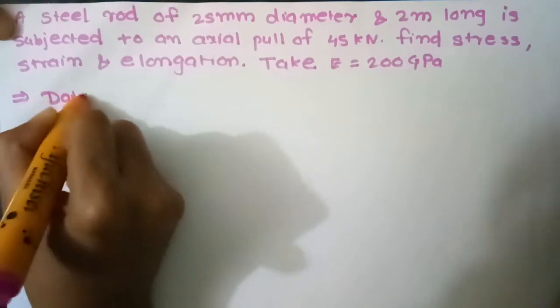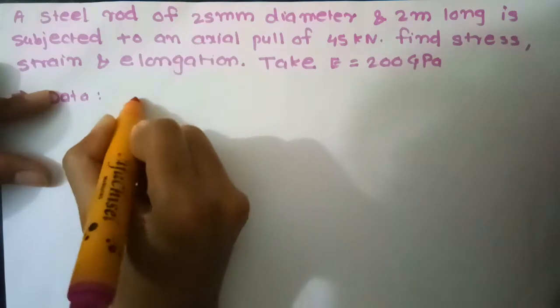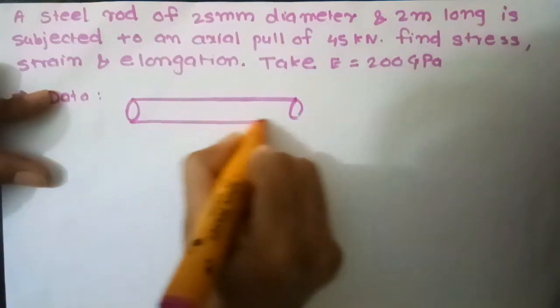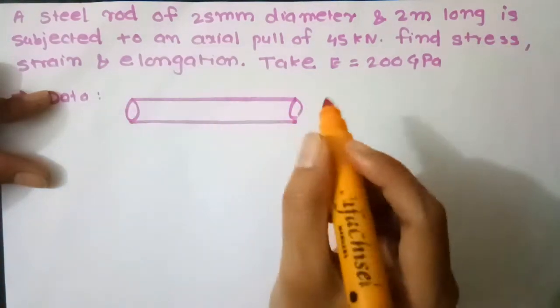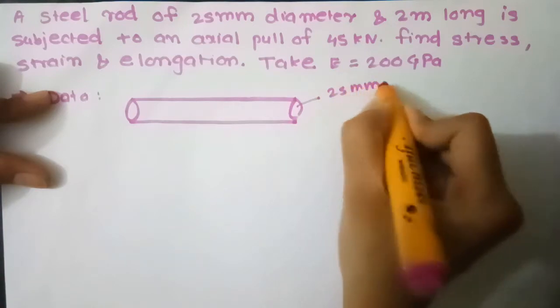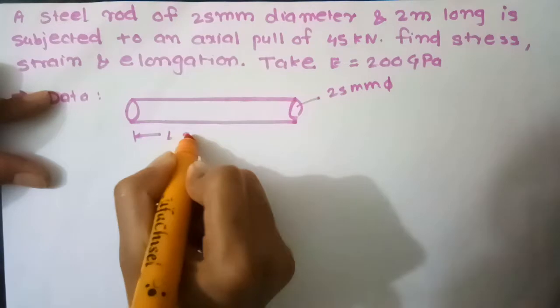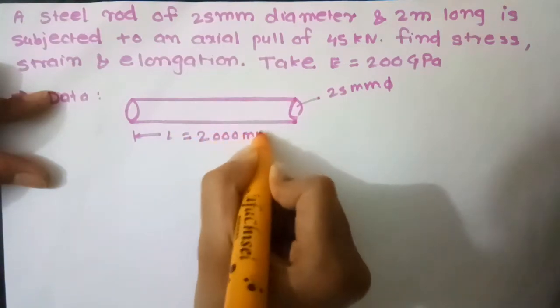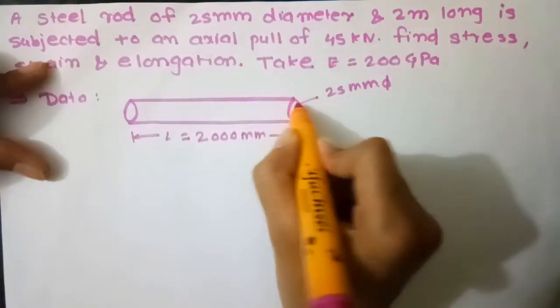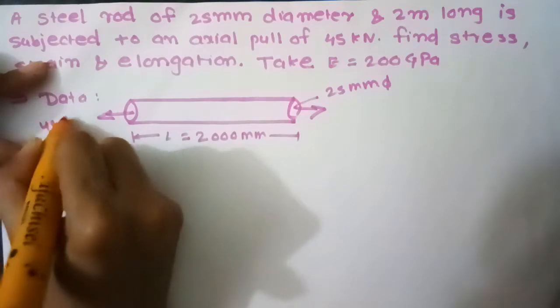Data: Steel rod of 25 mm diameter. Diameter is 25 mm. Length L 2000 mm. Subject it to an axial pull of 45 kN.